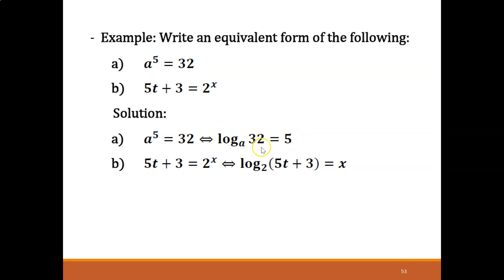So when in log, it will become the base again. When we write it in log form, log base a of 32 equals 5. So this is in log form, this is in index form. If we recall what we learned earlier about index, a is the base, 5 is the power.